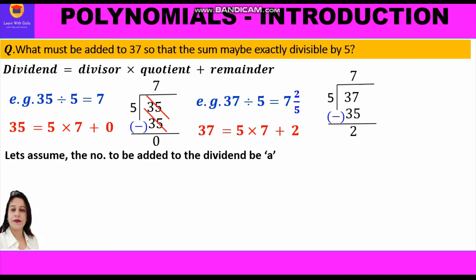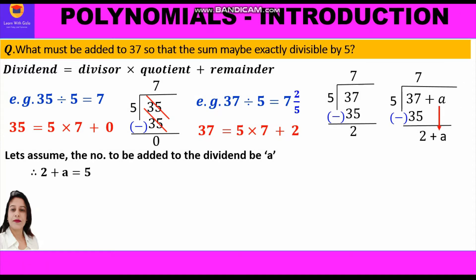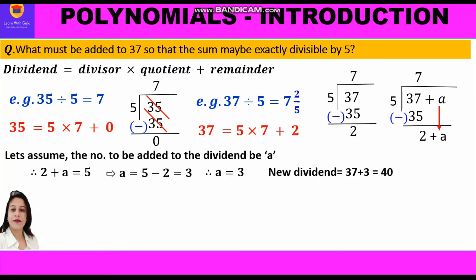Let us assume the number to be added to the dividend is a, so the new dividend is 37 + a. When we divide it by 5, we get remainder 2 + a. We need to find the value of a such that 2 + a is completely divisible by 5. So we equate: 2 + a = 5, giving a = 5 - 2 = 3.